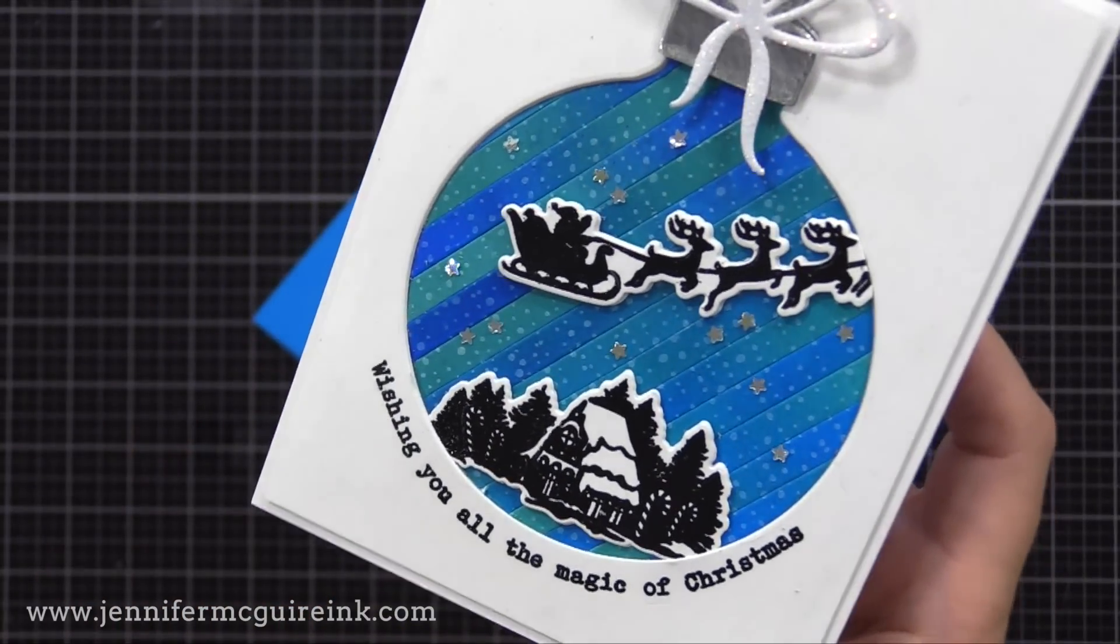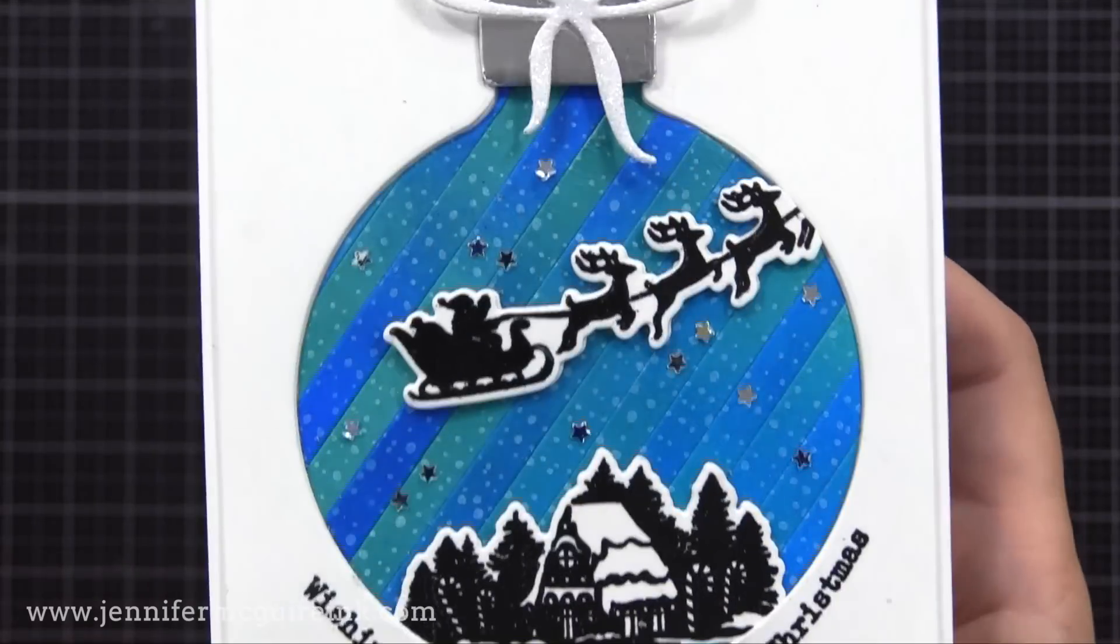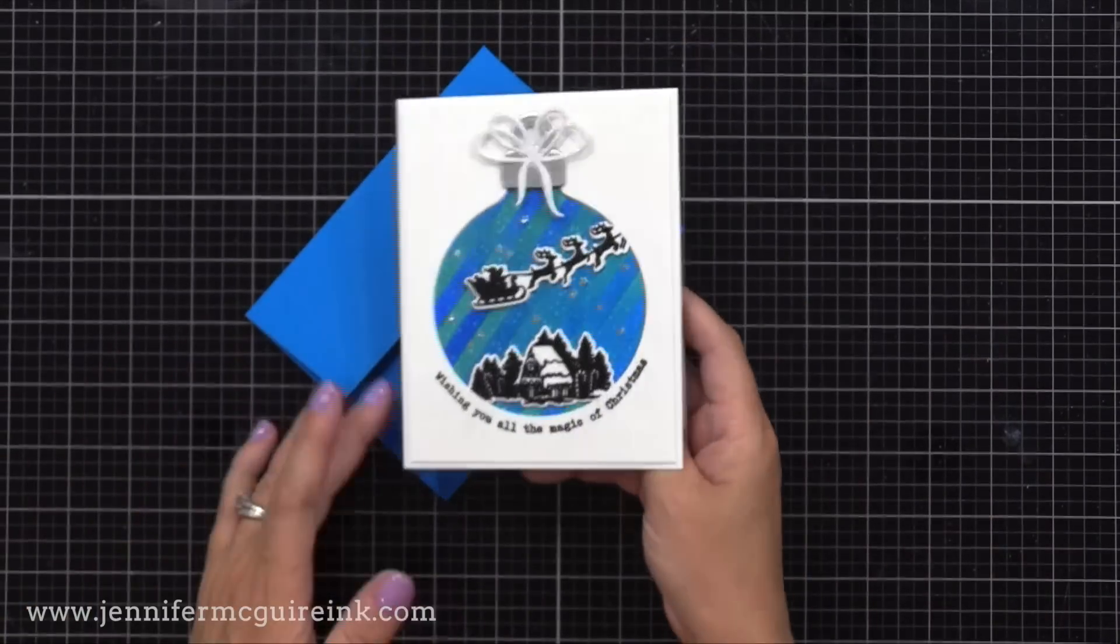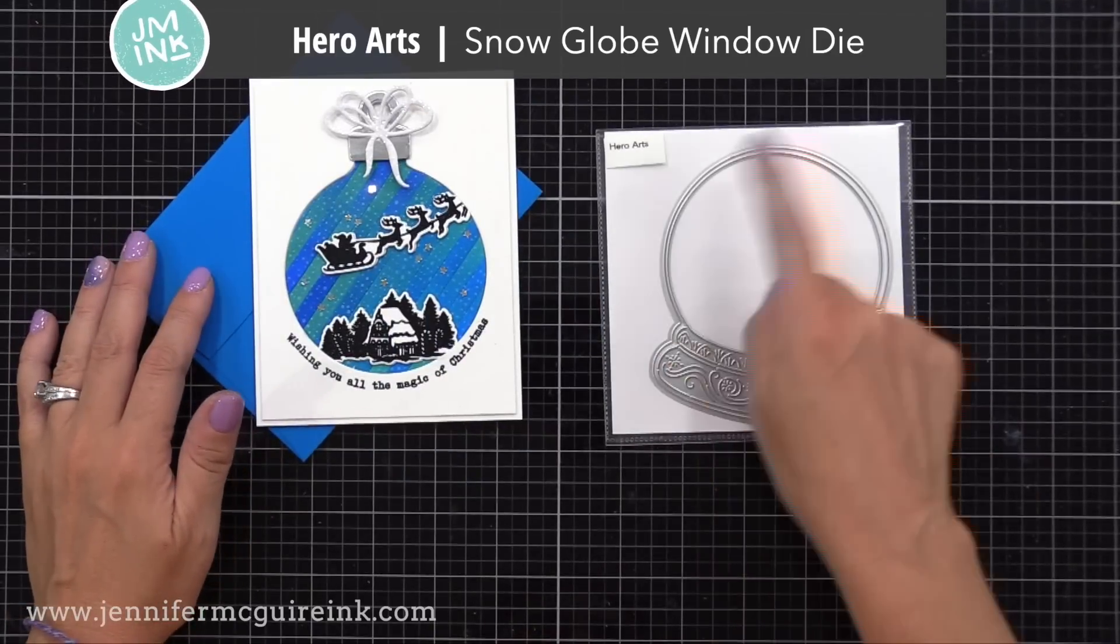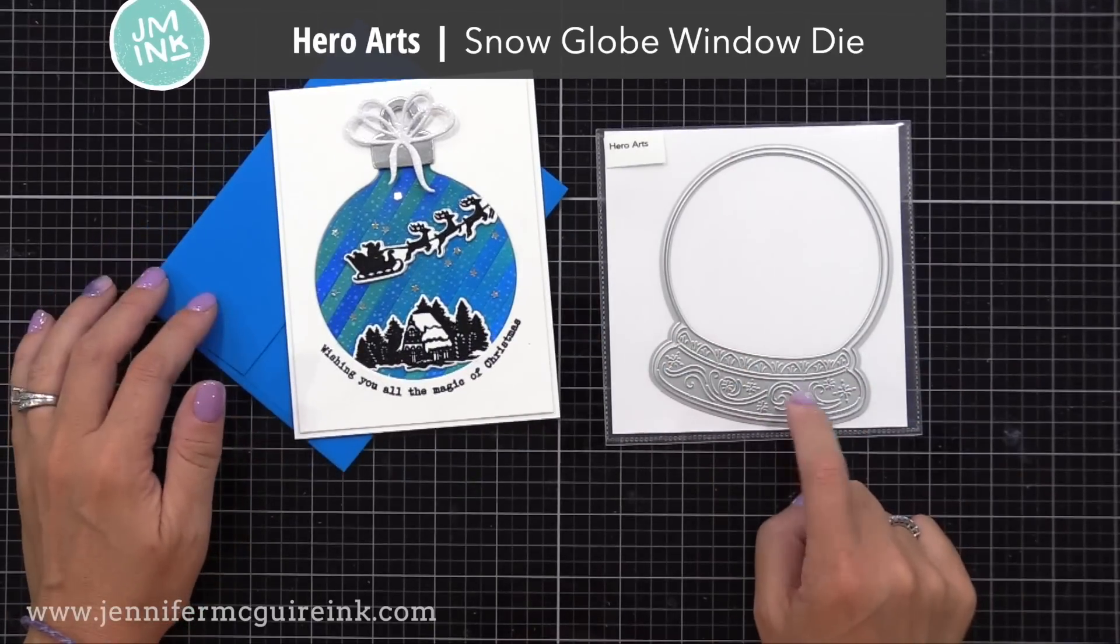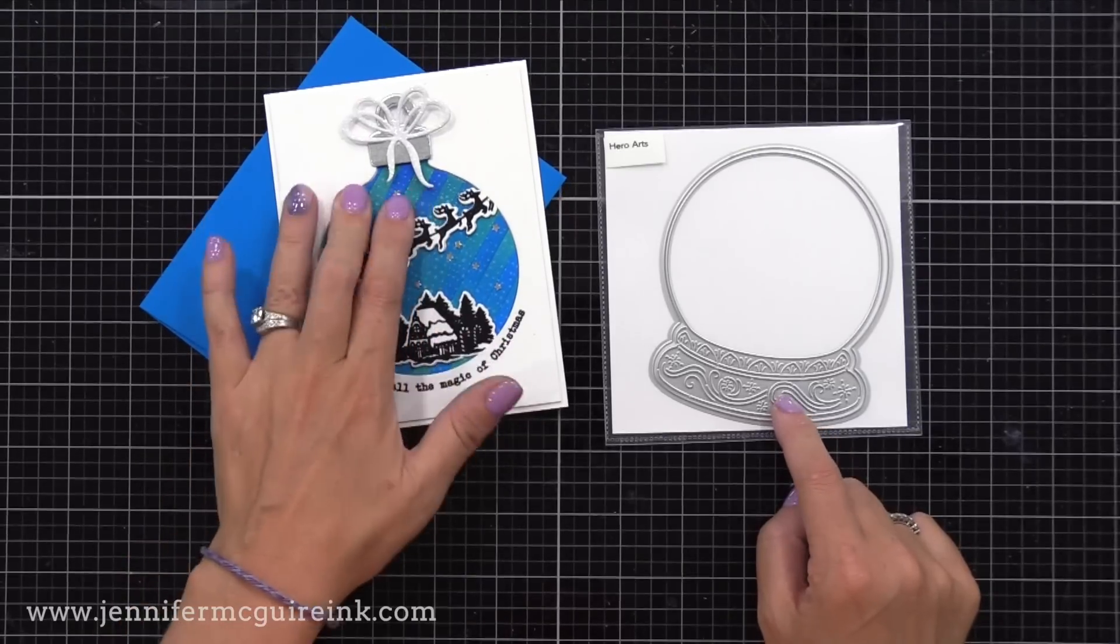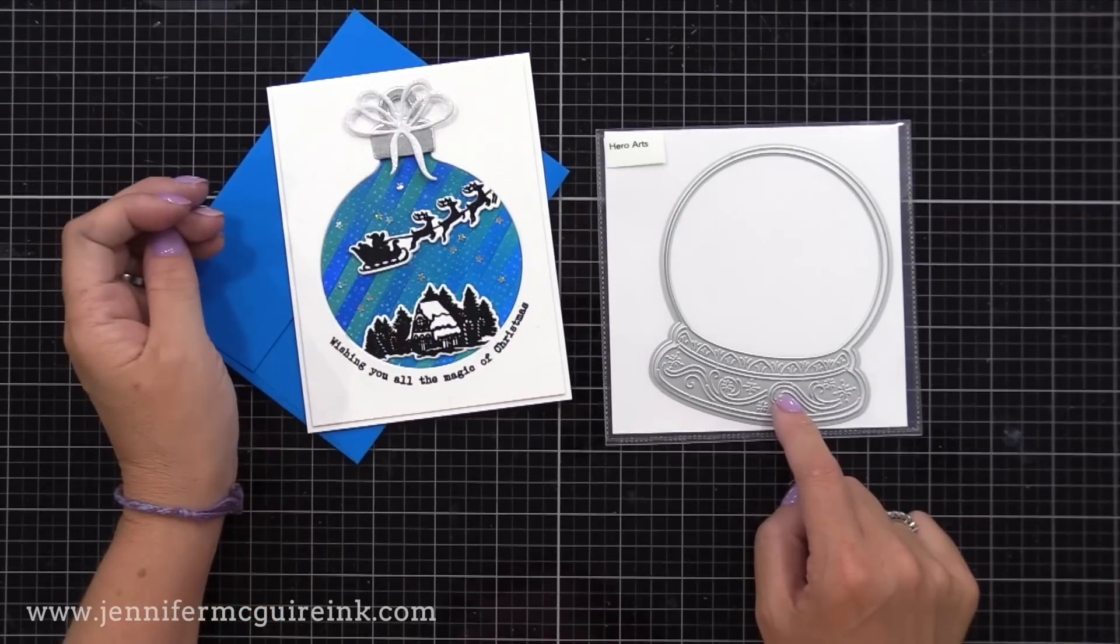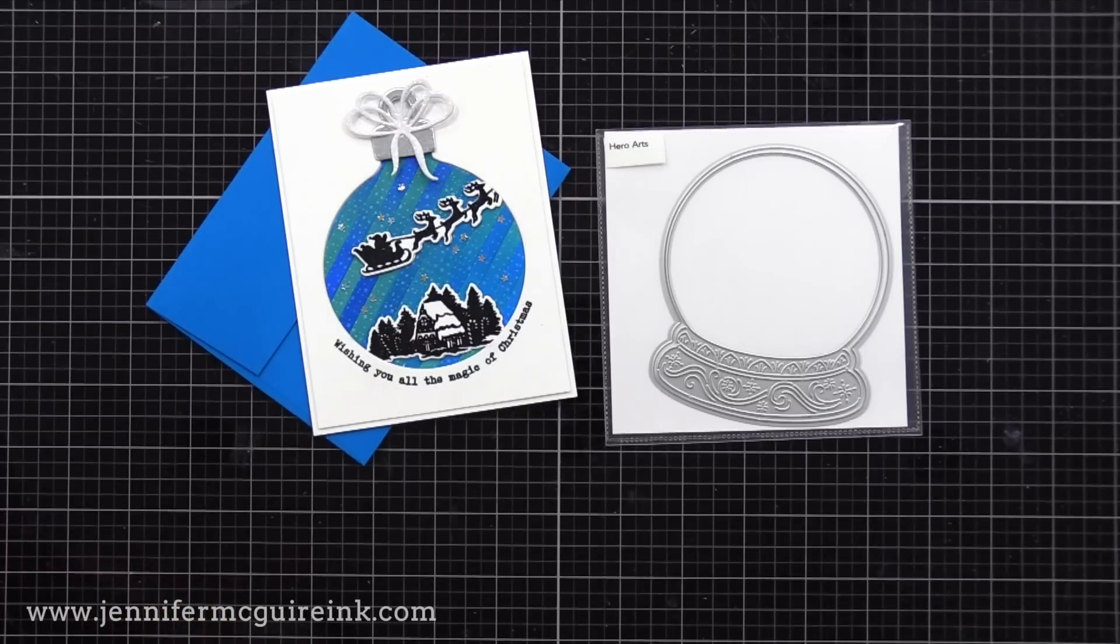And you don't have to start with inking. You could do sprays on your card stock and then do the stripe offset technique. You could do any kind of inking technique you like. By the way, this last card would really work great as a snow globe scene too. This is the new Hero Arts snow globe window die, but you definitely could use just a circle die and kind of create your own snow globe or ornament.